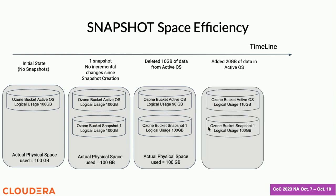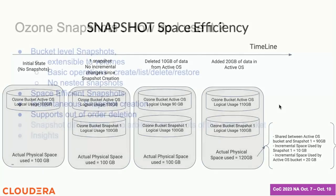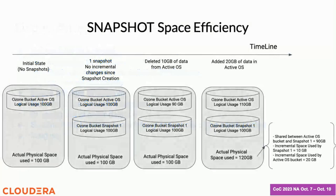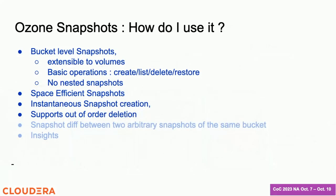If you add another 20 gig of data to your active object store, the actual physical space used is 120 gig — because 100 gig of data is locked in the snapshot and you just added another 20 gig on top of that. So overall, snapshots will use only as much space as is incremental.